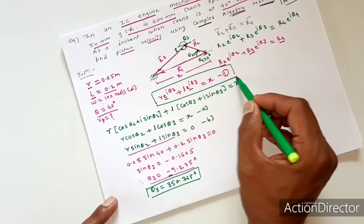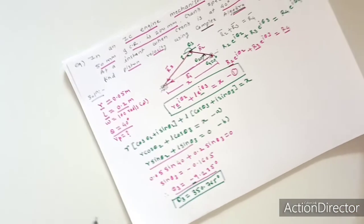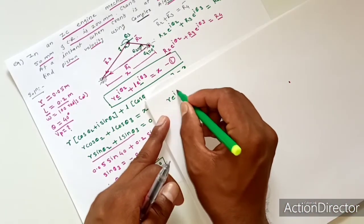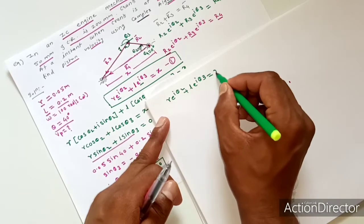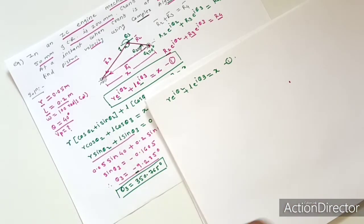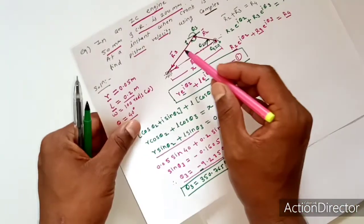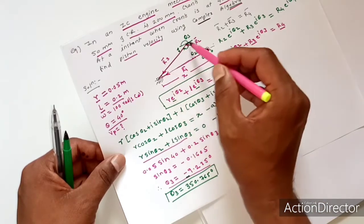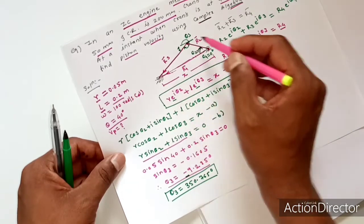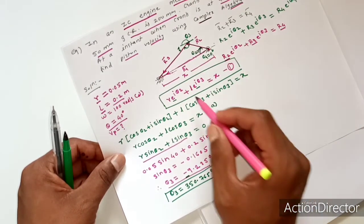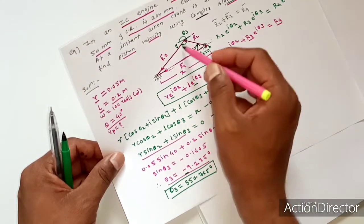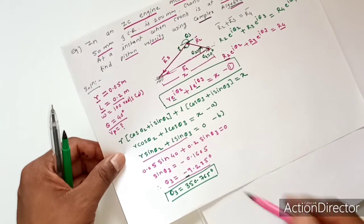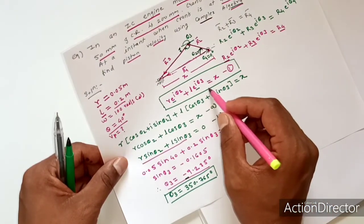Rewriting equation 1: r*e^(i*theta2) + L*e^(i*theta3) = x. By solving this displacement equation, we have obtained the unknown direction of vector R3. Now at this stage we know the magnitude and direction of all the vectors. To find velocity, we differentiate this displacement equation with respect to time.